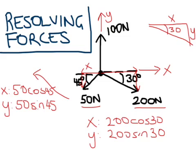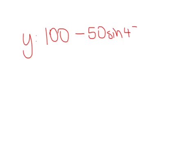So now if we were to find the overall force on this body, it's simply a matter of adding up all these components in the different directions. We'll see that in the y direction, we'll get 100, take 50 sin 45, that's subtract because it acts down, and subtract 200 sin 30 degrees.